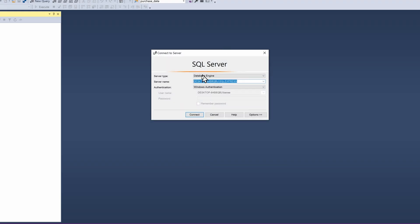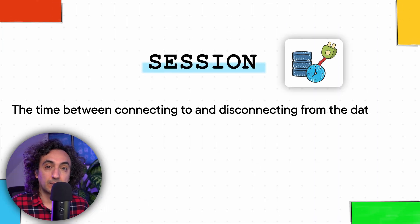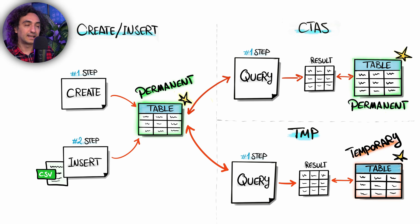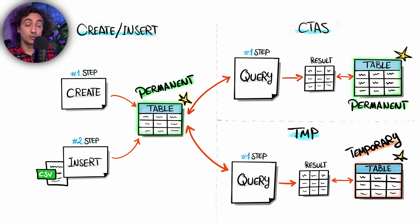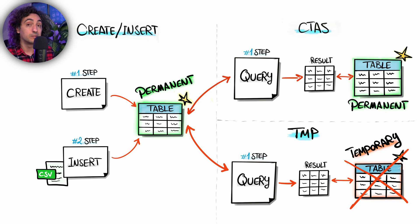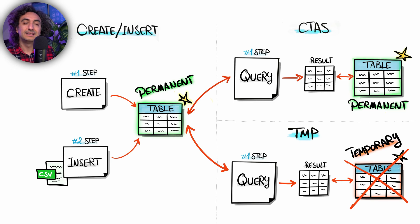What does 'session' mean? Once you open the client and connect to the database and start running queries, the time between connecting to the database and disconnecting from it is called a session. So once you close the client, disconnect, and shut down your PC, the database will destroy and delete all temporary tables created during that session. The table lives as long as the session is active.